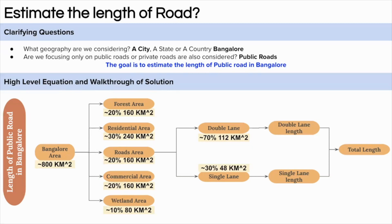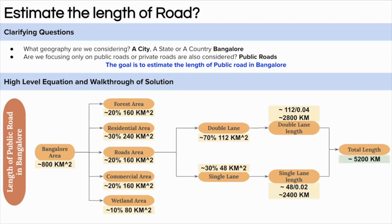To get the length of the double lane road, we assume the width is around 40 meters. Dividing the area by the width, the length of the double lane road comes to around 2800 kilometers. Similarly, for the single lane road, the area is 48 km² divided by 0.02 — as we are assuming single lane roads are 20 meters wide — giving a total length of the single lane road of around 2400 kilometers. Adding both gives a total length of the road in Bangalore of around 5200 kilometers.